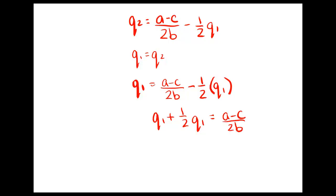So we have (3/2)Q1 equals (A - C)/2B. To get rid of this, we'll multiply by 2/3 on both sides. The 2's cancel over here and we're left with Q1 equals (A - C)/3B. And that also equals Q2.